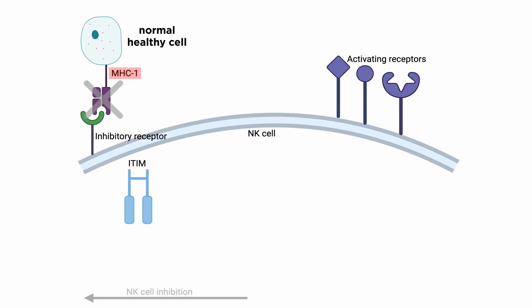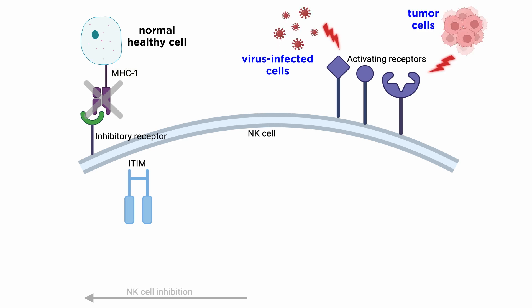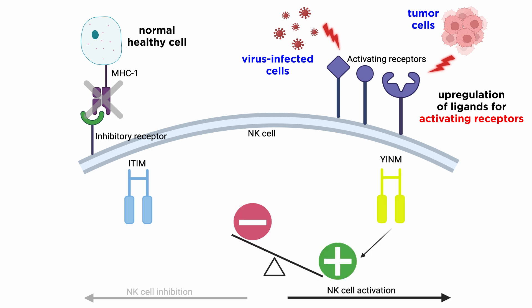Normal healthy cells always express MHC class 1 molecules on their surface that act as ligands for inhibitory receptors and contribute to the self-tolerance of NK cells. However, virus-infected cells or tumor cells lose surface MHC class 1 expression, leading to lower inhibitory signals in NK cells. In addition, cellular stress associated with viral infection or tumor development causes senescence programs or tumor suppressor genes to upregulate ligands for activating receptors in these cells. As a result, the signal from activating receptors shifts the balance toward NK cell activation and elimination of target cells directly through NK cell-mediated cytotoxicity, or indirectly through secretion of pro-inflammatory cytokines.